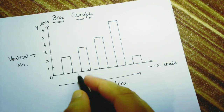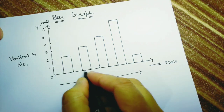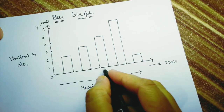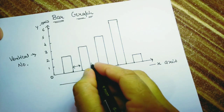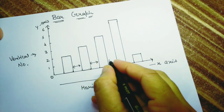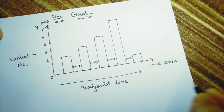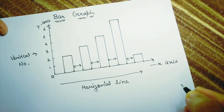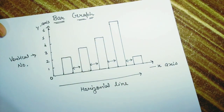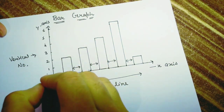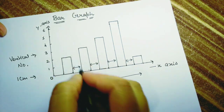One important thing to remember: the difference between any two bars always remains the same. You can observe here — it is one centimeter, same here, and here also one centimeter. In all five bars the difference is the same, and this is represented by the scaling.